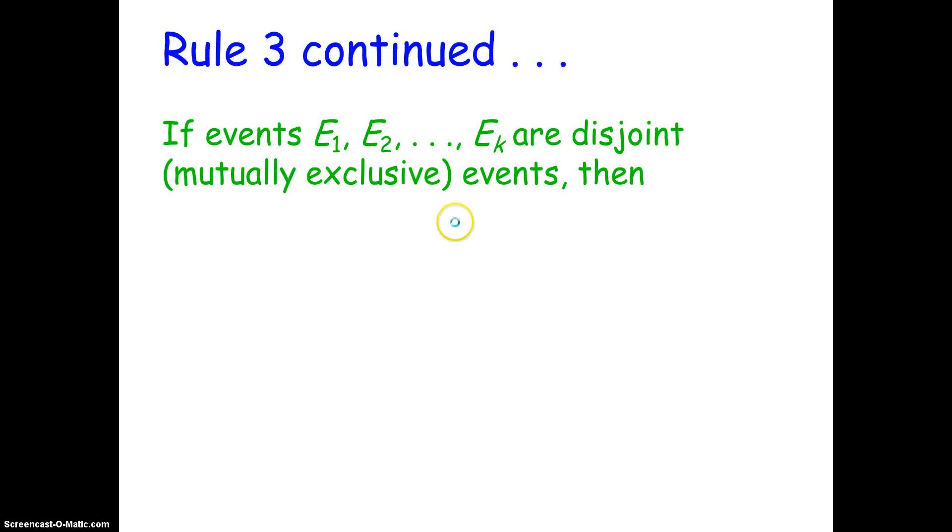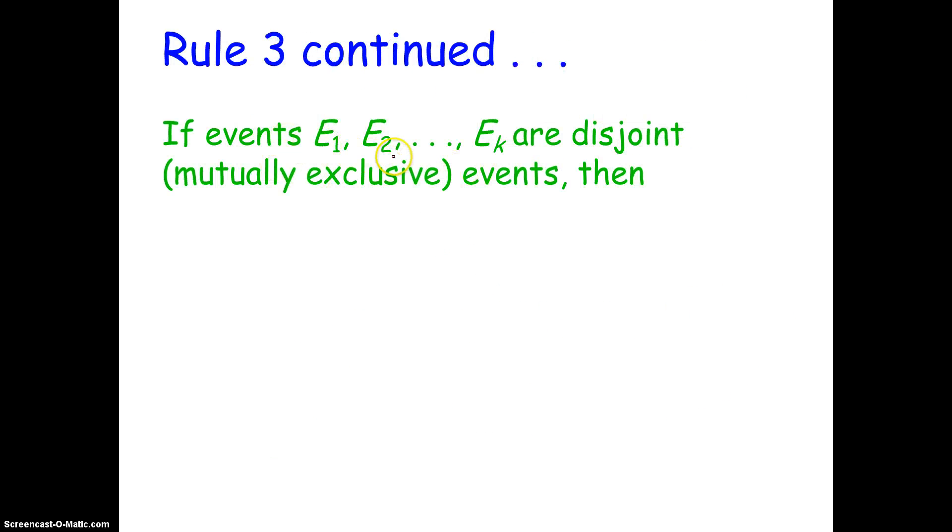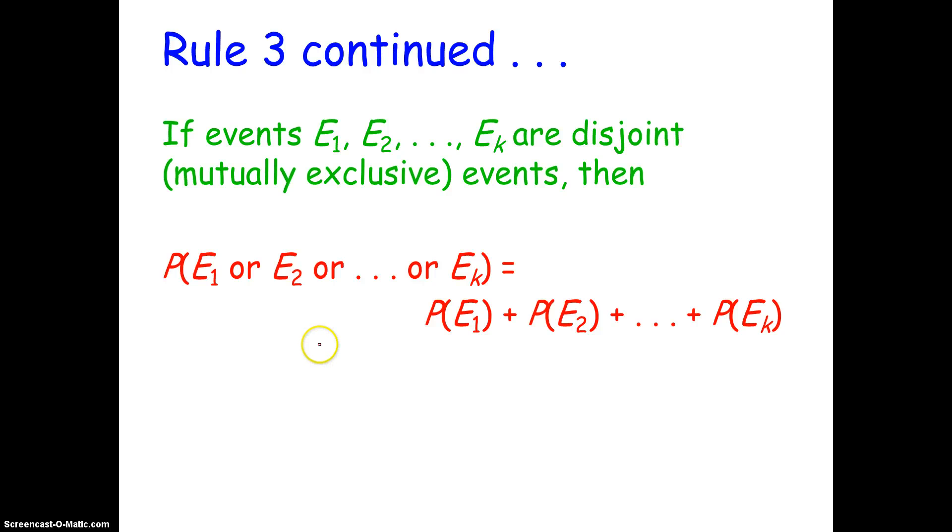So this is just an extension of the rule we see here, right? The probability of one or another disjoint event is the probability of each added together. So if events E1, E2, E3, E4, all the way up to sum number K are disjoint events, they can't happen at the same time, the probability of one or another is simply going to be the sum of those events added together. In words, the probability that any of these K disjoint events occurs is the sum of the probabilities of the individual events.